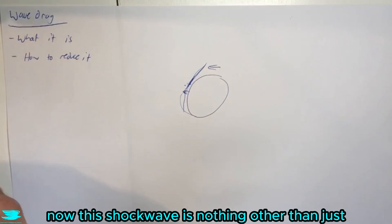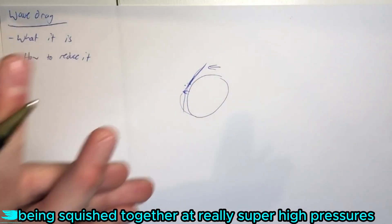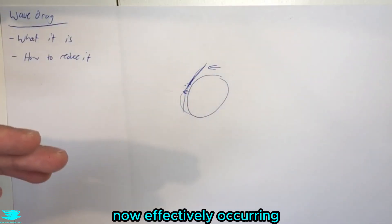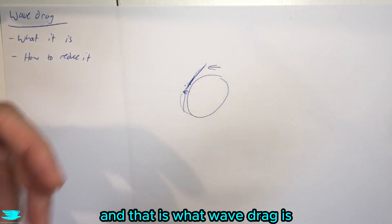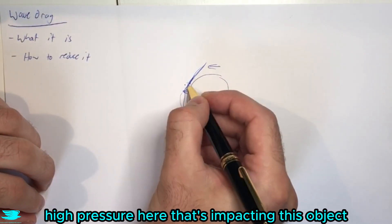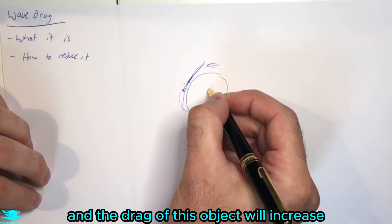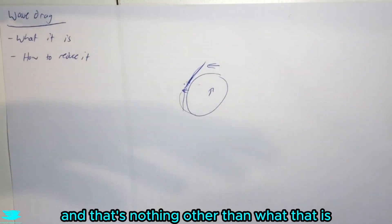Now this shockwave is nothing other than just all these air molecules being squished together at really super high pressures, and that is a pressure barrier now effectively occurring. And that is what wave drag is. You have this high pressure here that's impacting this object now in this fashion, and the drag of this object will increase due to this wave drag.